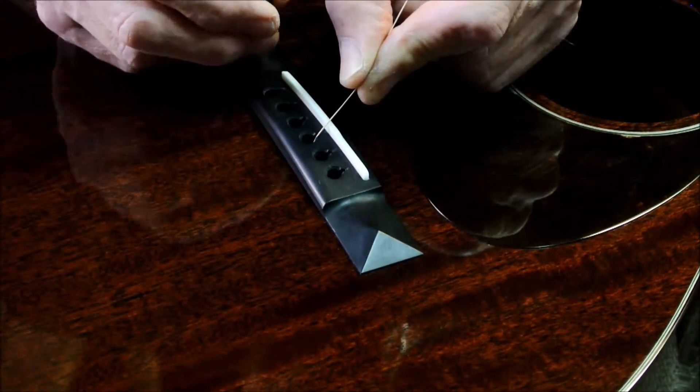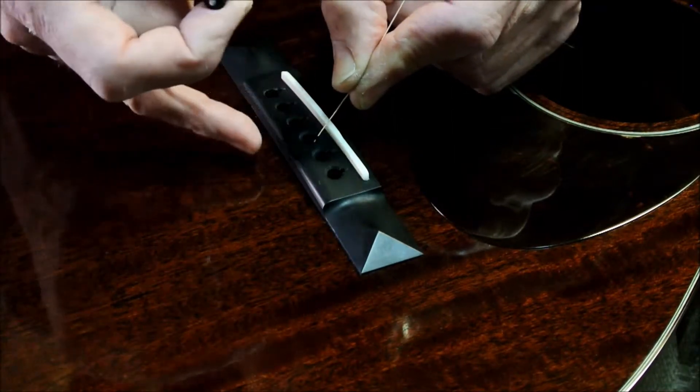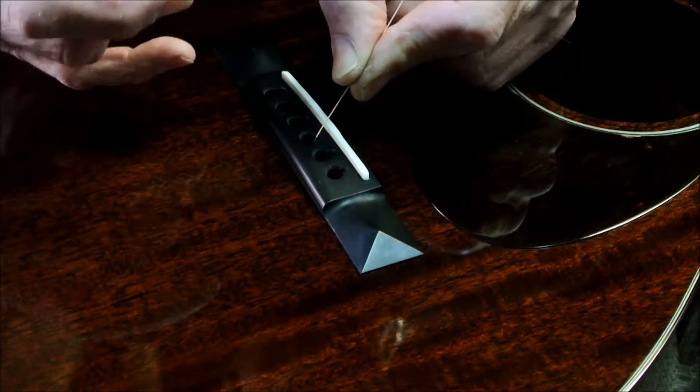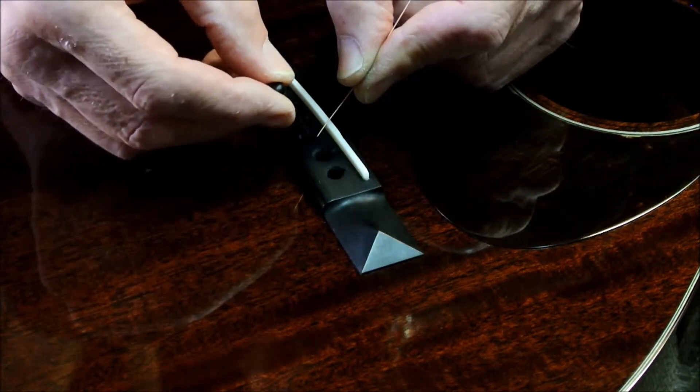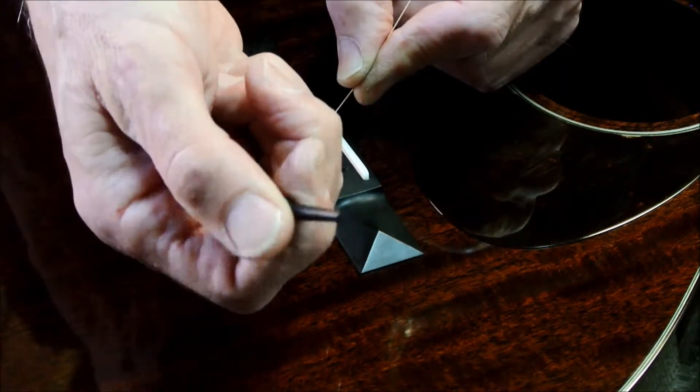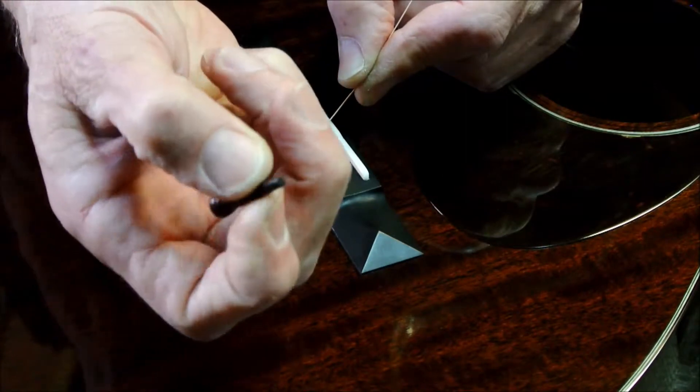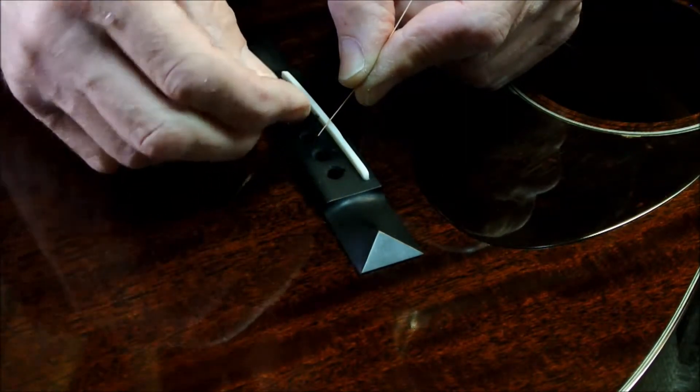It just kind of snugs up there. I'm gonna put the bridge pin in. This is a non-slotted bridge pin, so it really doesn't matter what angle I put it in on. If it was slotted, of course, the slot should go where the string is.